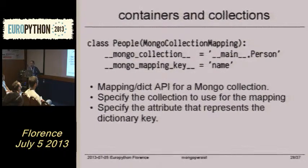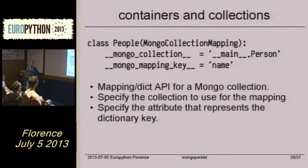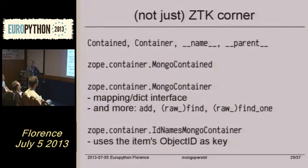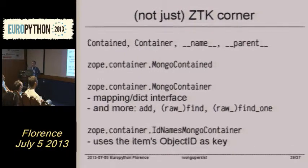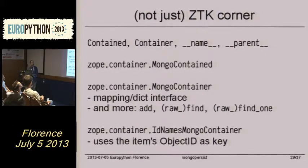With the __mongo_collection__ property you specify the collection name where you want the items stored within the database. The __mongo_mapping_key__ is where you specify the object attribute which should be taken as the key of the mapping. This is the ZTK-ish corner — it provides a lot of nice features, and the ZOPE addition is just the events: on adding an item to a container or modifying objects, it fires built-in ZODB events.